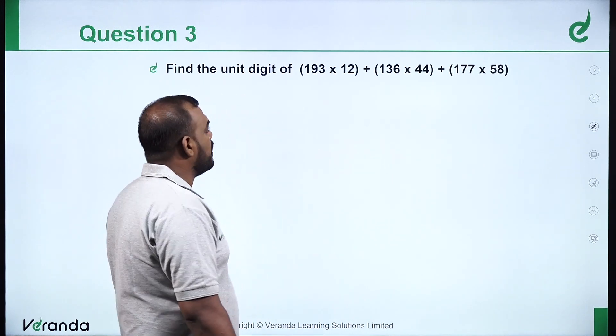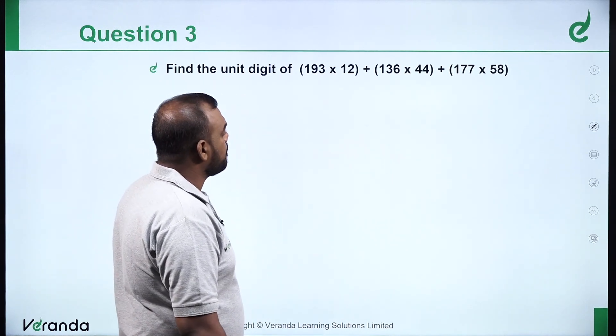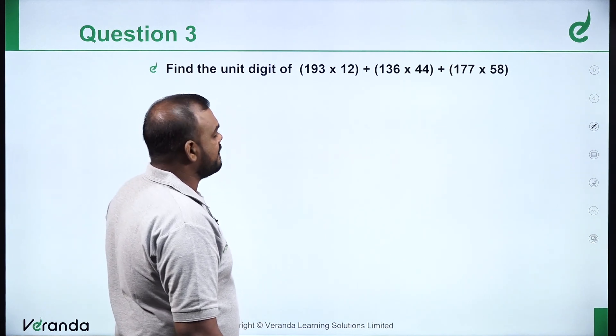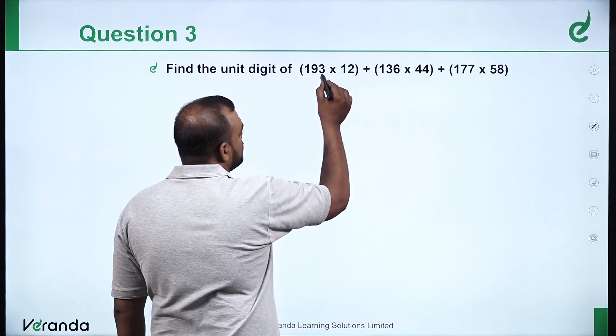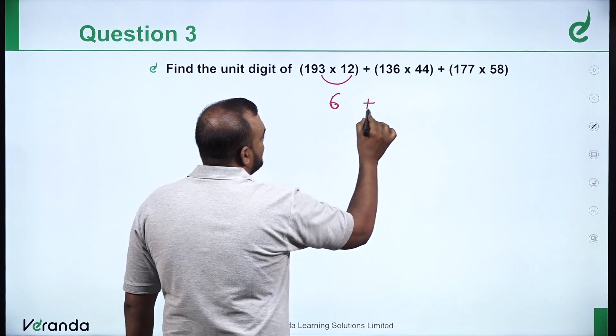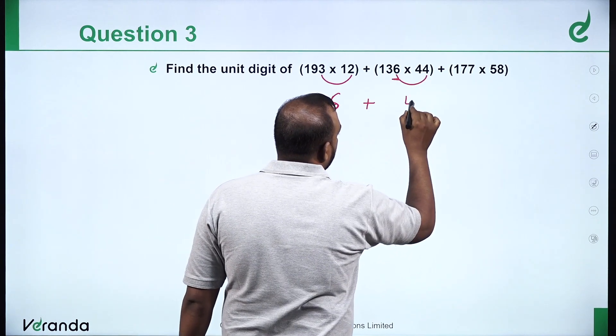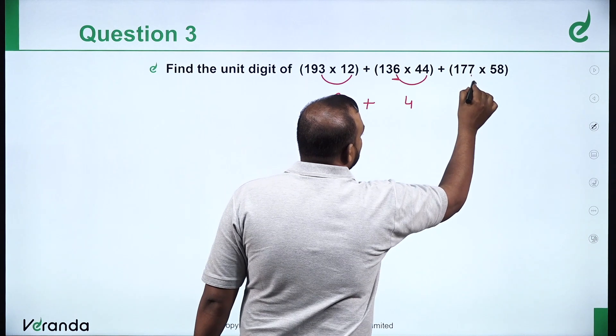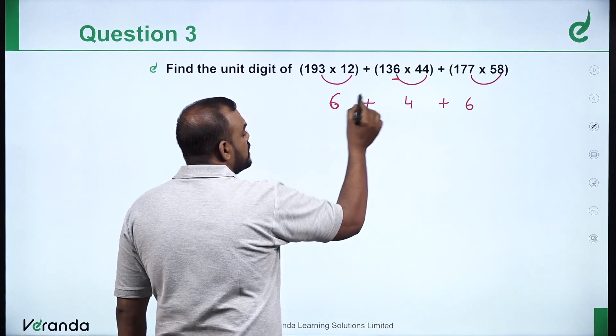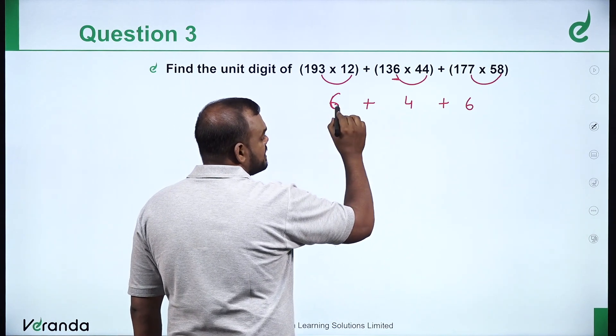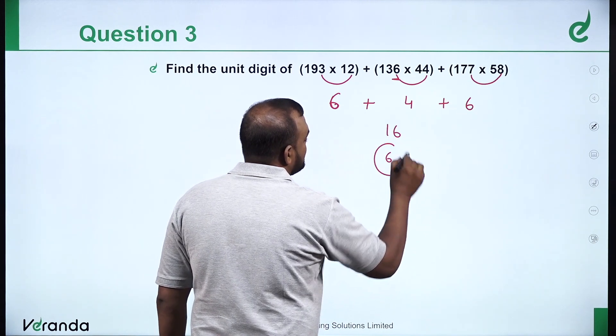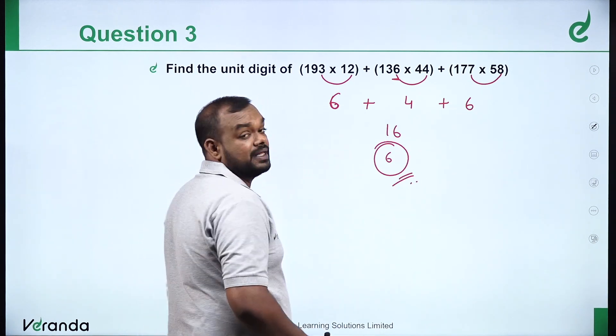Find the unit digit of 193 into 12 plus 136 into 44 plus 177 into 58. 3 into 2 is 6. Plus, 6 into 4 is 24, unit digit is 4. Plus, 7 into 8 is 56, unit digit is 6. Finally, what is 6 plus 4? 6 plus 4 is 10, 10 plus 6 is 16. The unit digit is 6. 6 must be the answer.